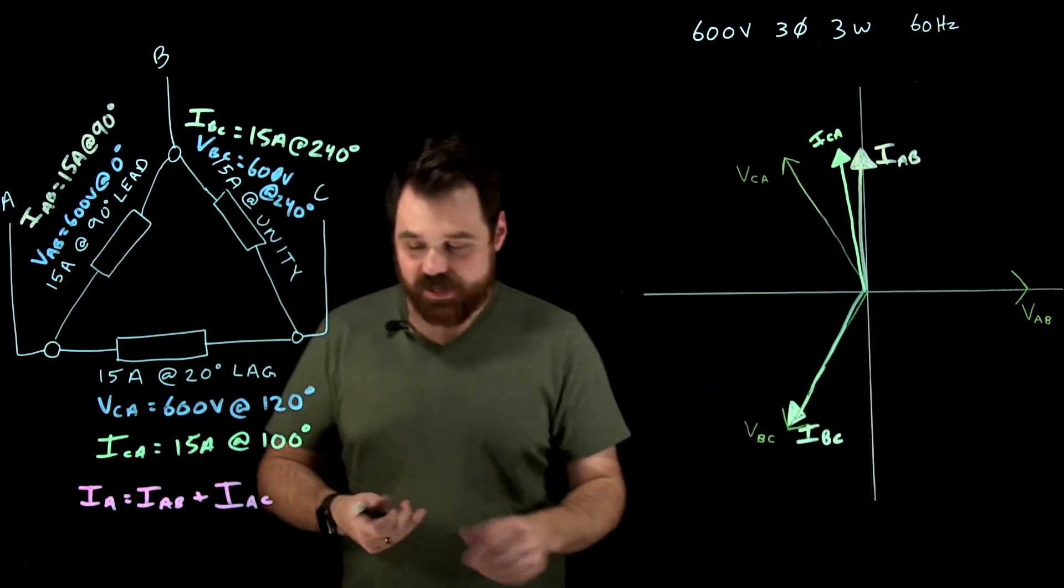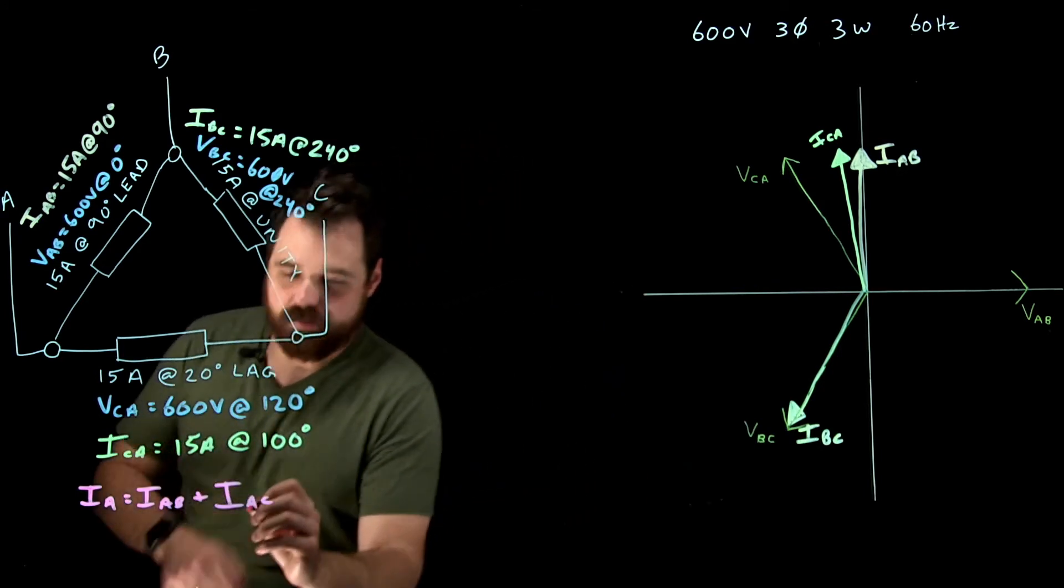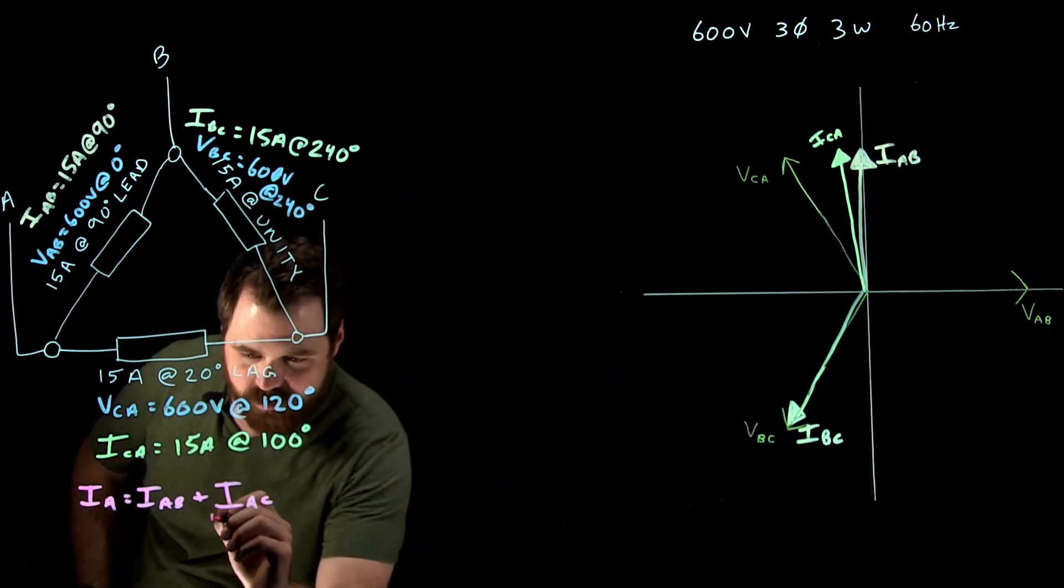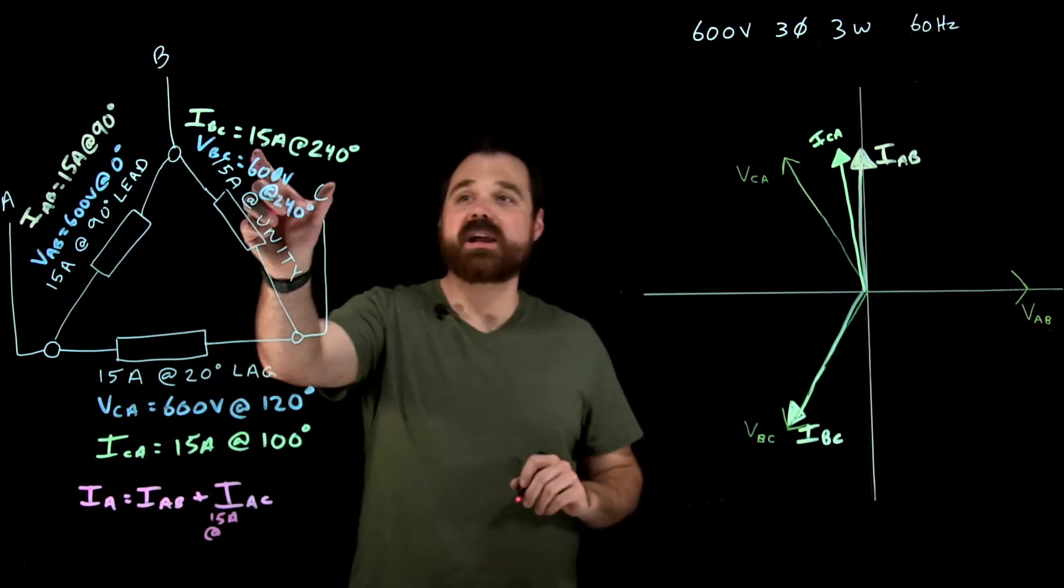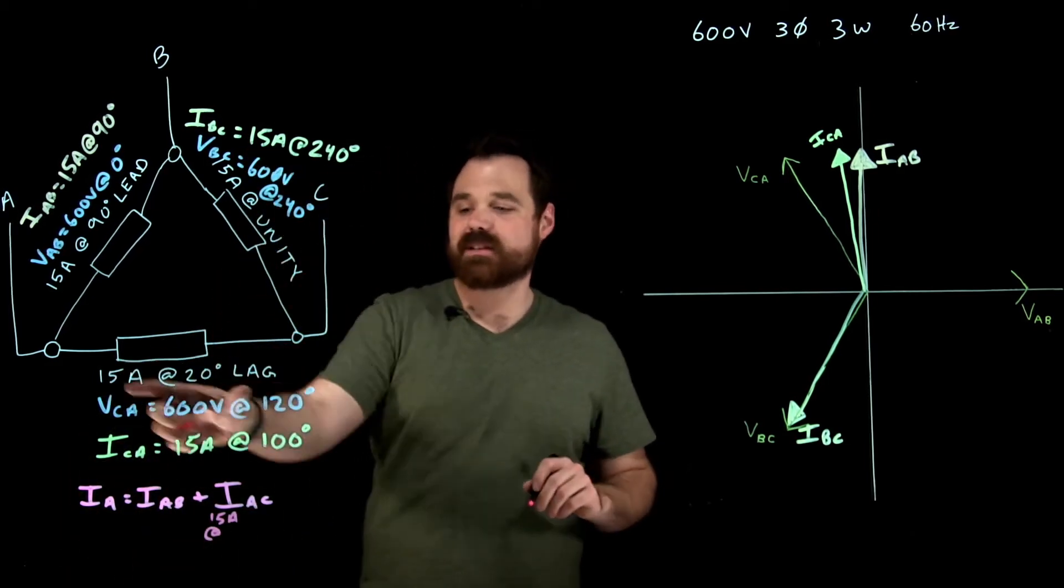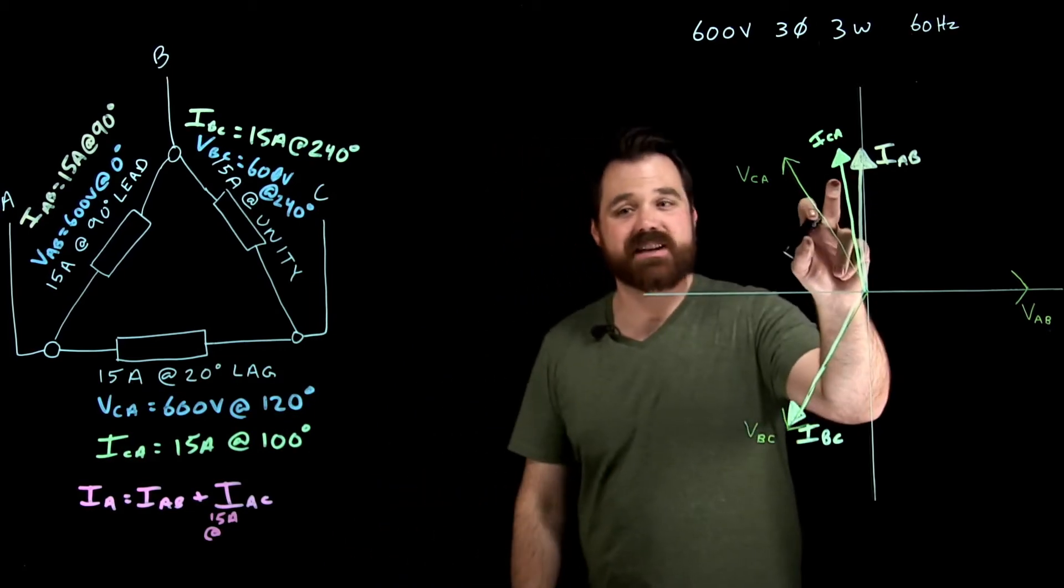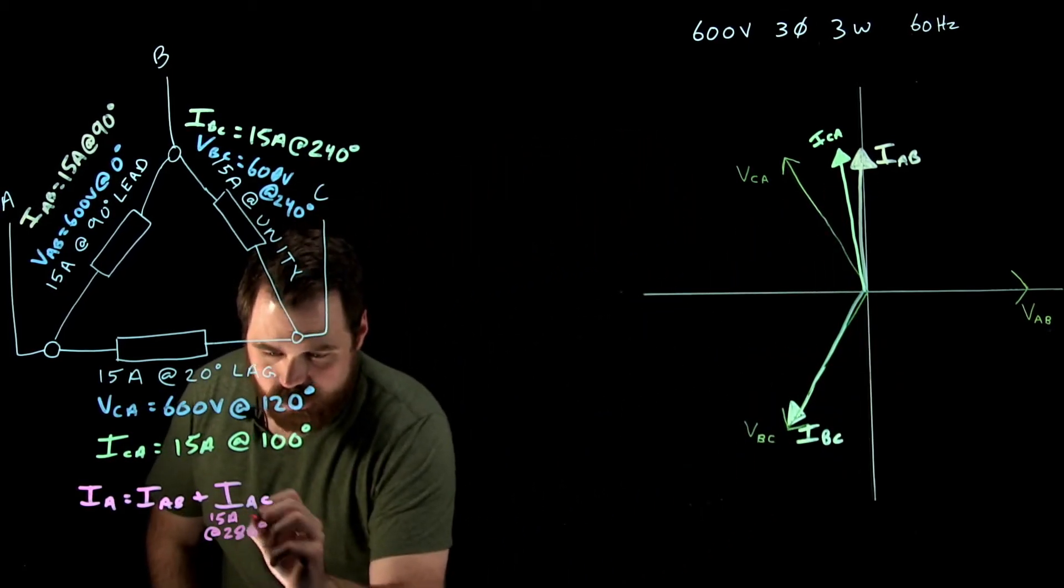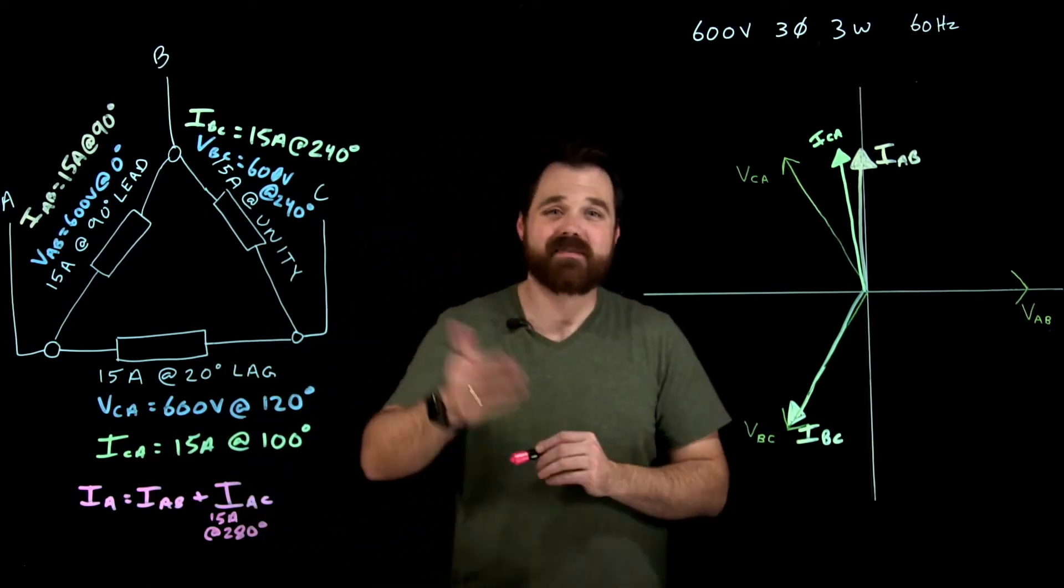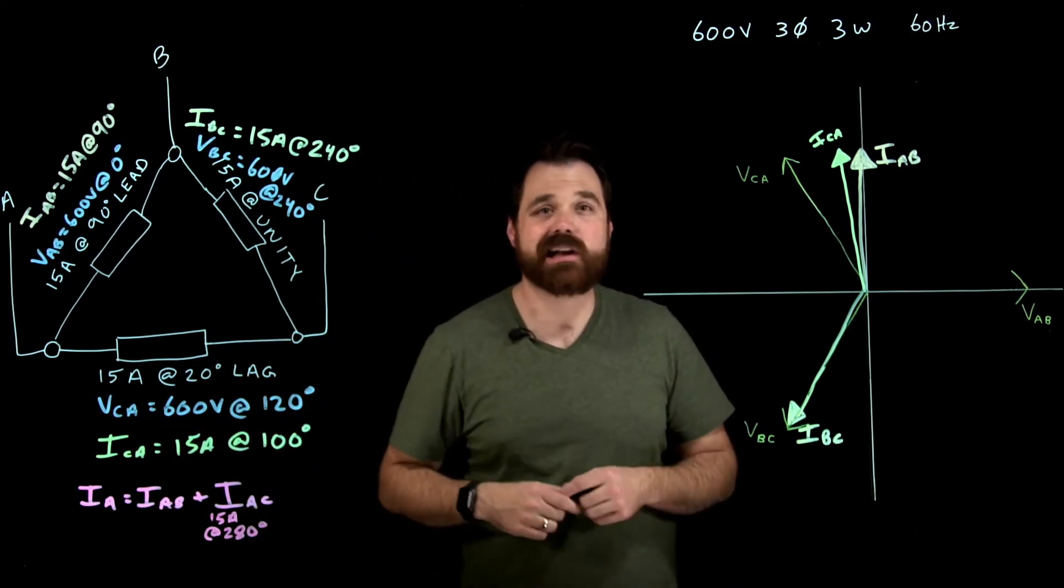So I A to C is actually going to be right here. I'll write it down right here 15 amps at 180 degrees from C to A. So C to A is at 100. So this one is going to be at 280 degrees. So it's the direct inverse of that. So that's how we would calculate I A.